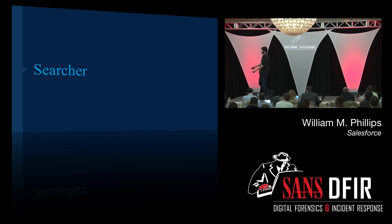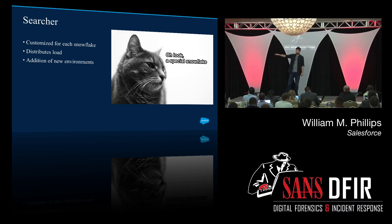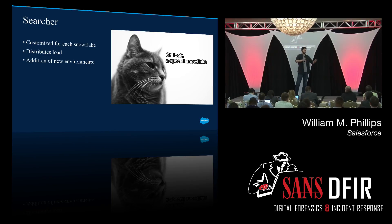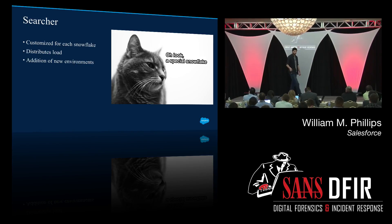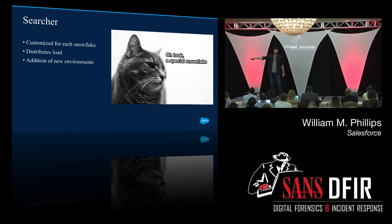Searcher. The searcher is essentially just the advent of the special snowflake — we have so many special snowflakes, it was such a headache. It's customized for every special snowflake, but this has its advantages: it allows us to distribute the load. When you have a lot of different environments, you spin up a bunch of different searchers; you don't have to worry about one searcher handling everything. Adding new environments is really important because we buy a new company every couple months. You literally copy-paste the code, change the endpoint, and it keeps working without any interruption of service.